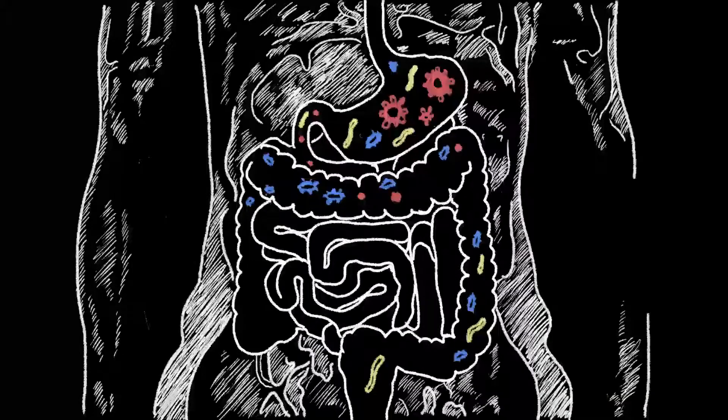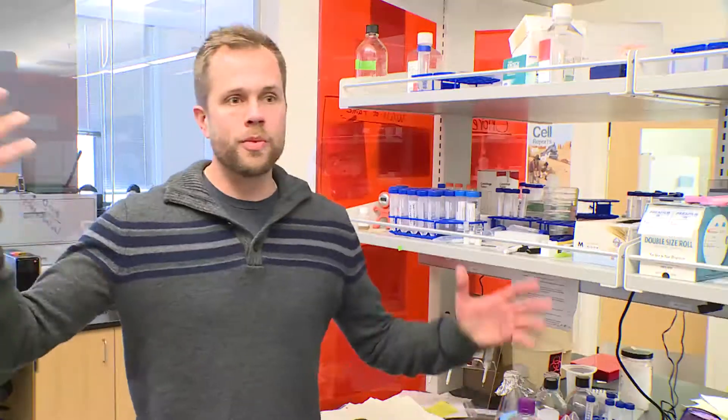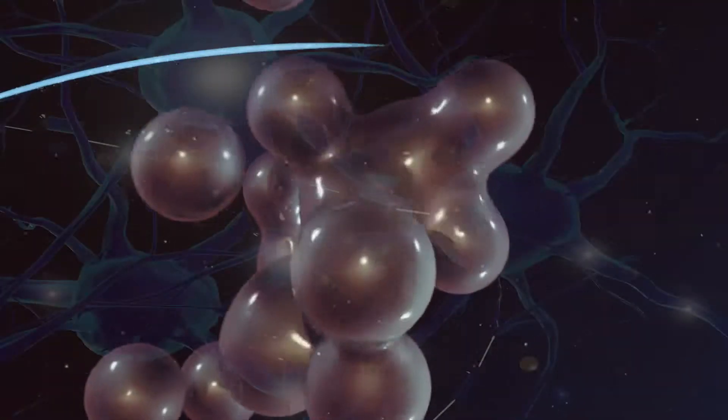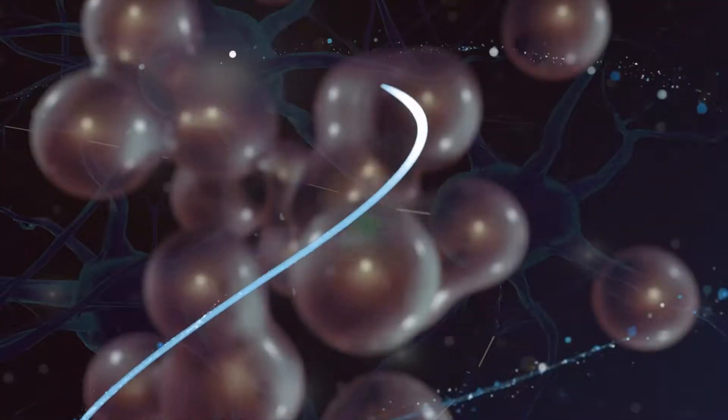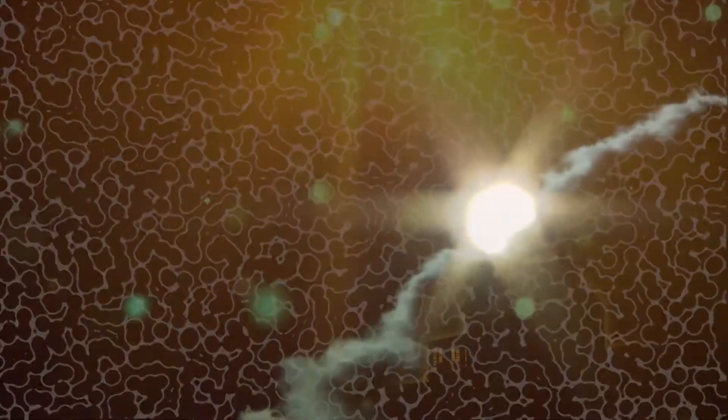If you didn't have apoptosis, you'd have 100 feet of intestine and way too many immune cells — you'd have autoimmunity, it would be a mess. Not all cell death is created equal, and cells can die in ways that are silent or in ways that are very loud and dramatic to the immune system.